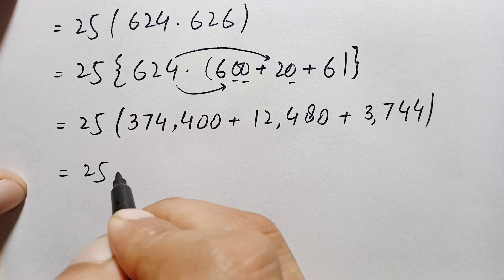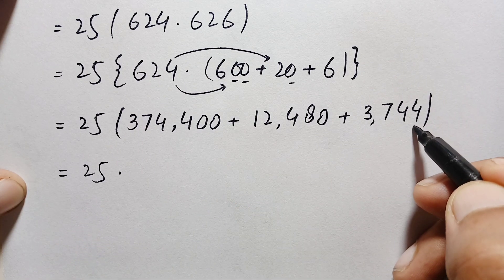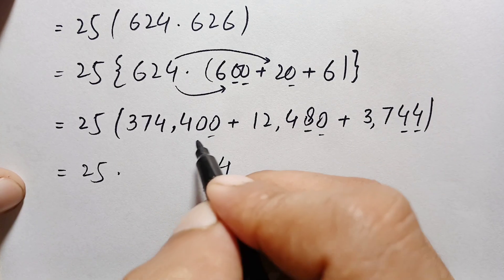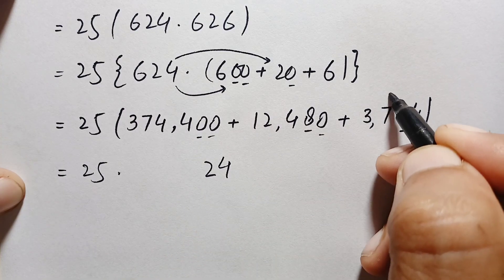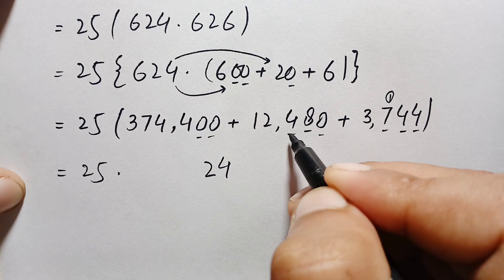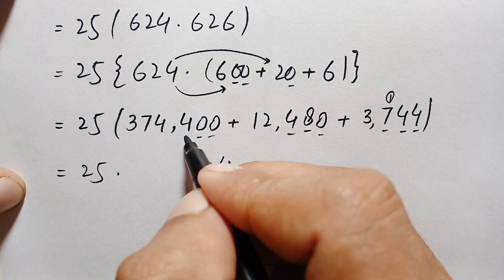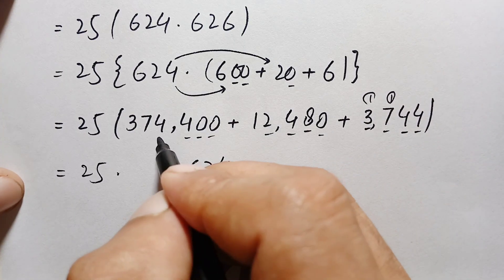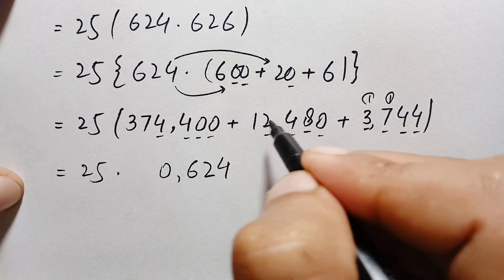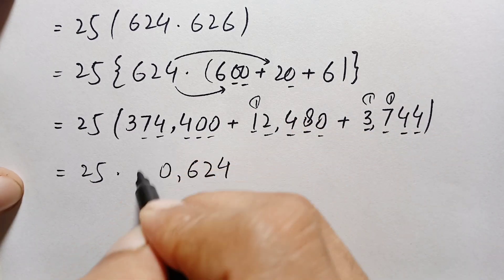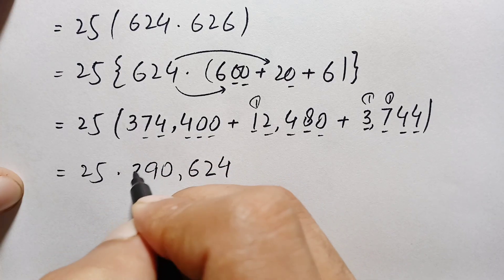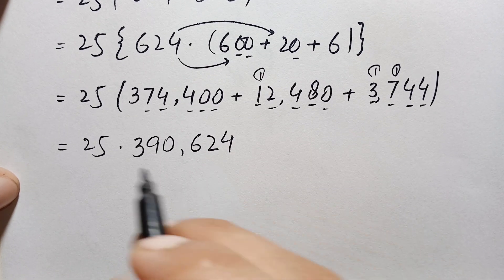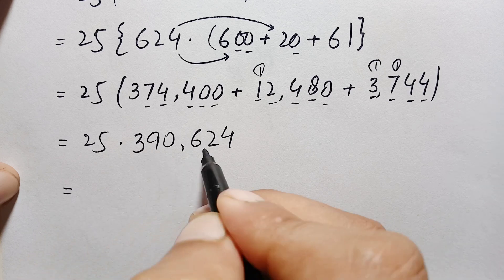Adding 374,400 plus 12,480 plus 3,744: starting from the ones position, 4 plus 0 plus 0 is 4; 4 plus 8 plus 0 is 12, write 2 carry 1; 7 plus 1 plus 4 plus 4 plus 1 gives 16, write 6 carry 1; 3 plus 1 plus 2 plus 0 gives 10, write 0 carry 1; 1 plus 1 plus 7 is 9; and 3. So the sum of these three numbers is 390,624.